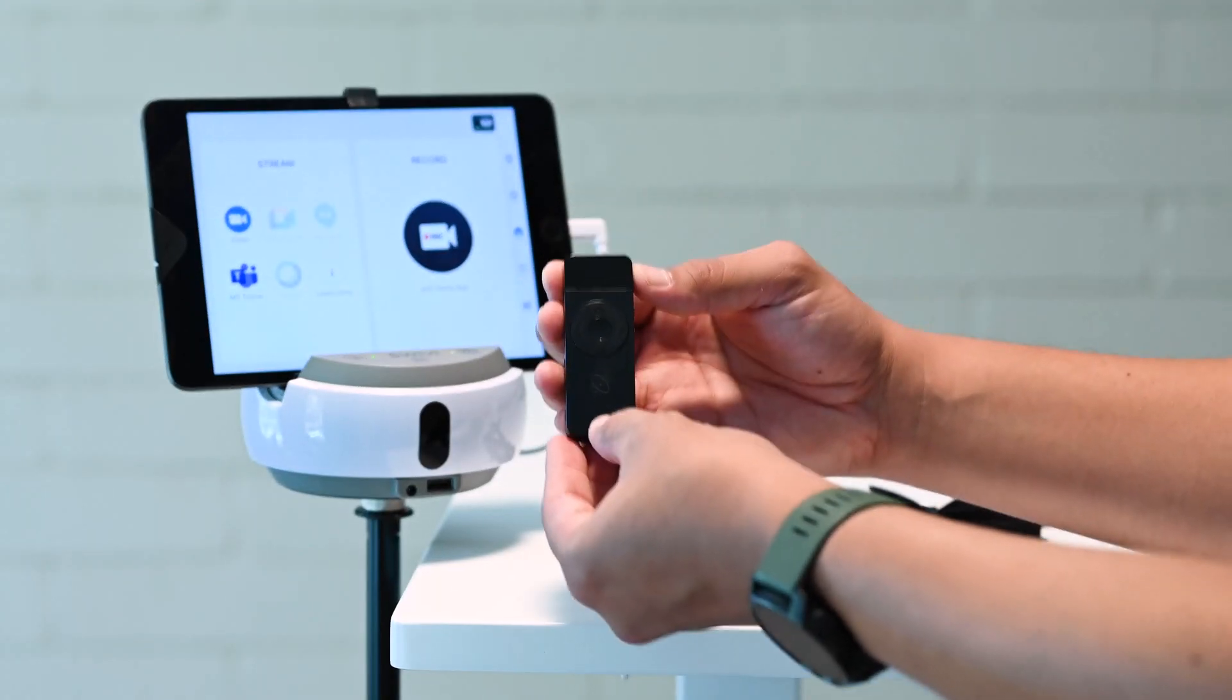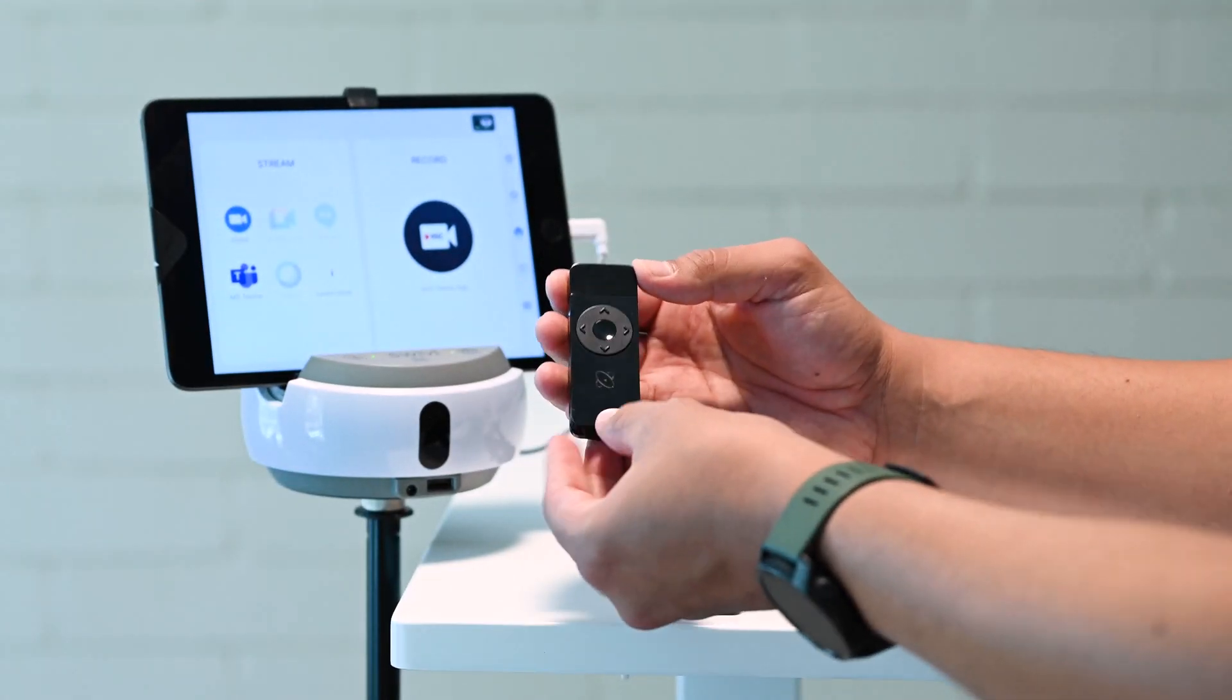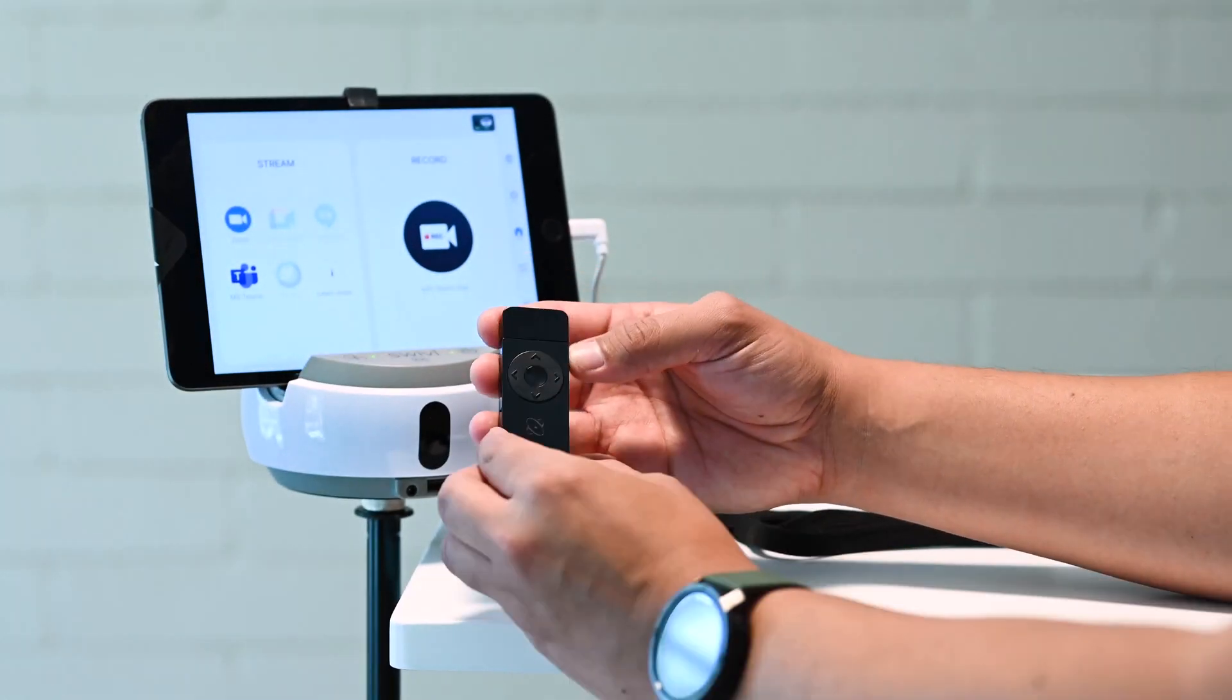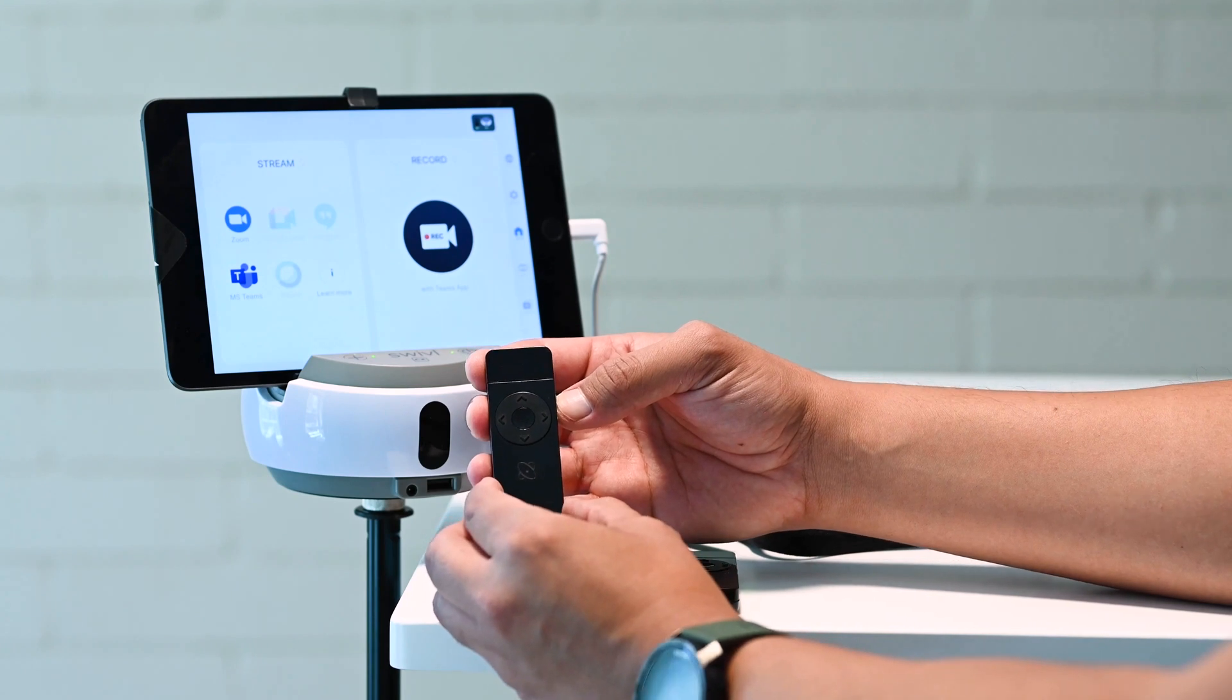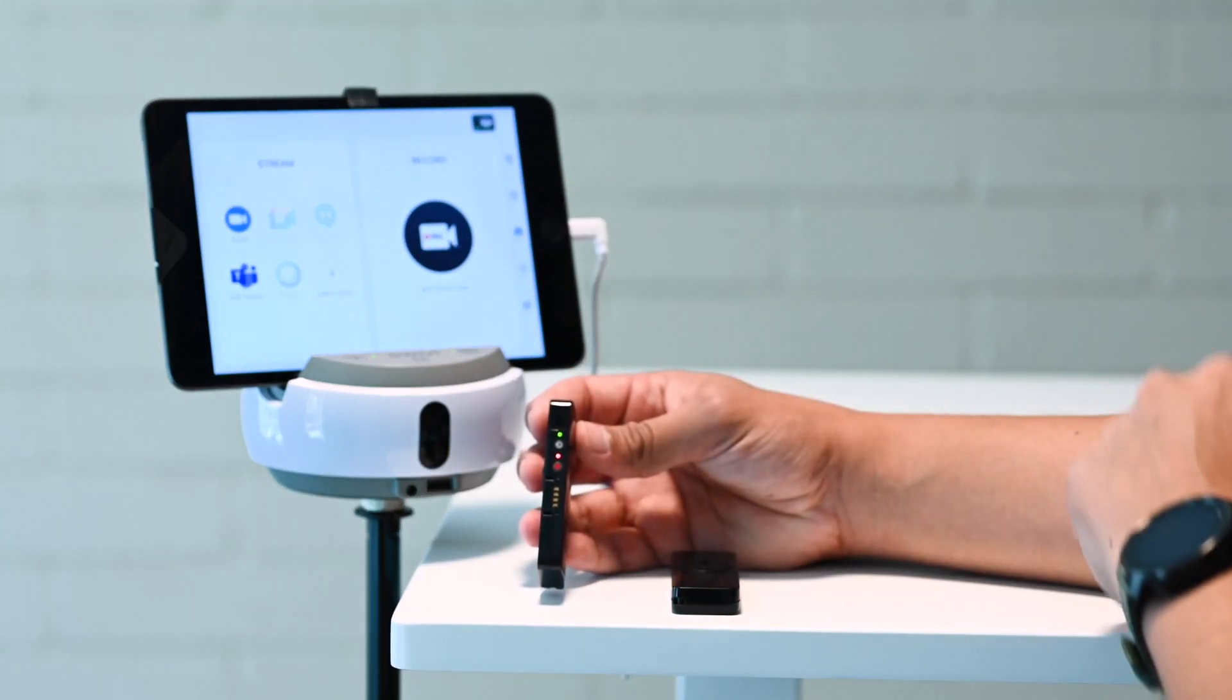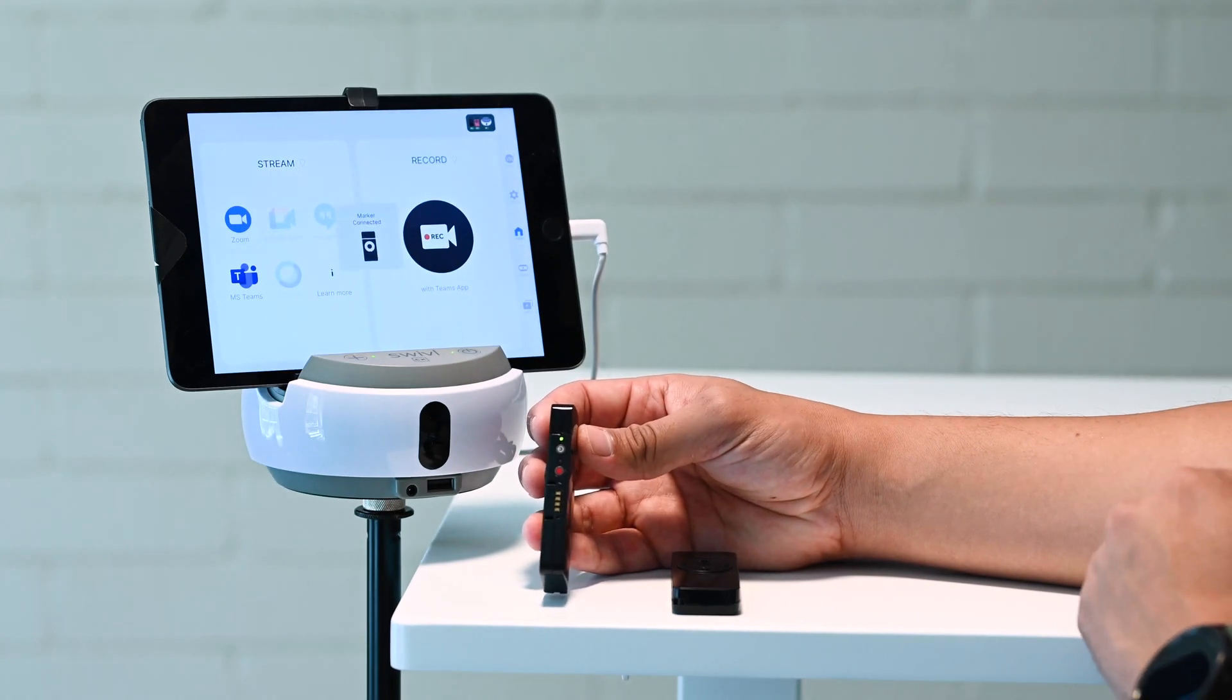Any other marker that you turn on with your Swivel robot after your primary marker will be your secondary markers. Once you turn on your secondary marker, you'll notice the same flashing lights while it's connecting. You'll also have an indication that the marker is connected.